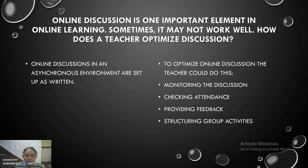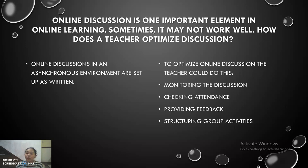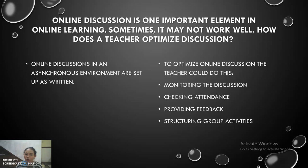Online discussion is an important element in online learning, but sometimes it may not work well. How does a teacher optimize discussion? Online discussion is written text, which means it is in an asynchronous environment. To optimize it, the teacher needs to monitor the discussion, check student attendance, and provide feedback. Structuring group activities using the Jigsaw method can also help — the teacher makes small groups of two or three students who discuss a topic related to the course, then share their knowledge with all classmates.